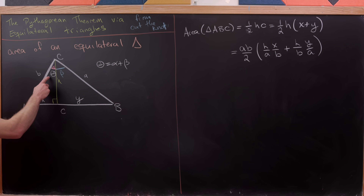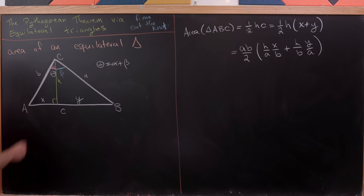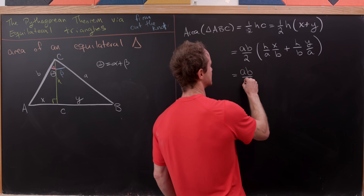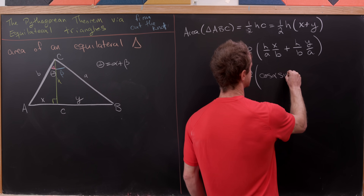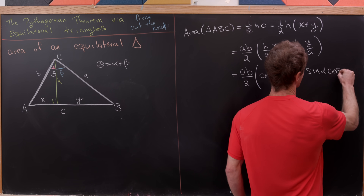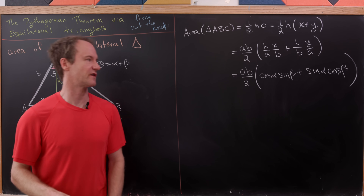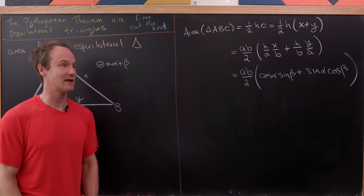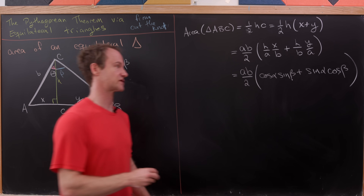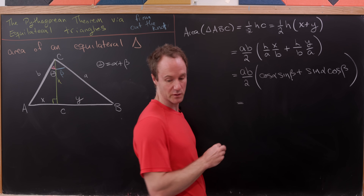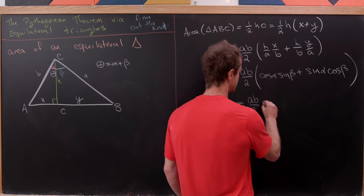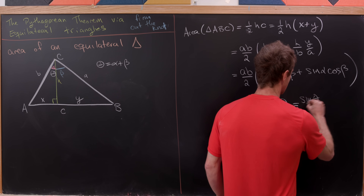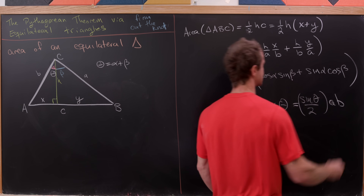Similarly, h over b is the cosine of alpha, and y over a is the sine of beta. So we can rewrite the area as (ab over 2) times (cosine alpha · sine beta + sine alpha · cosine beta). This matches the angle sum identity, which can be proven without the Pythagorean theorem, keeping us non-circular. Applying it gives us (ab over 2) times sine of theta, or equivalently (sine theta over 2) times ab.